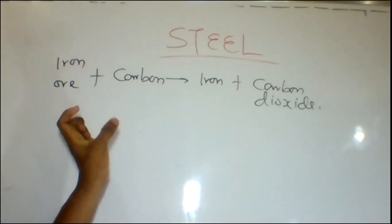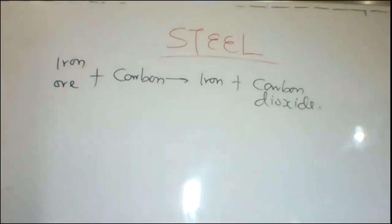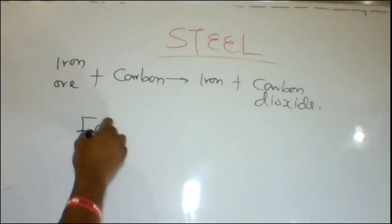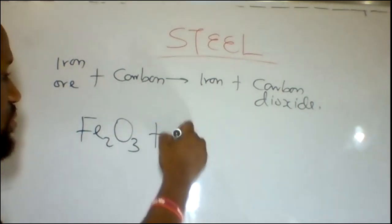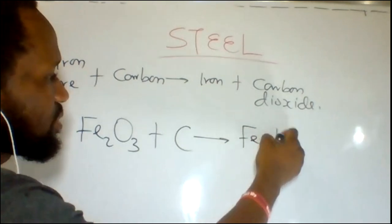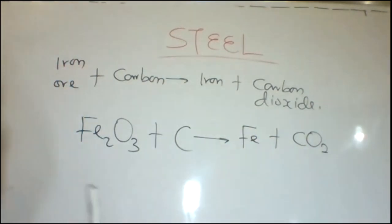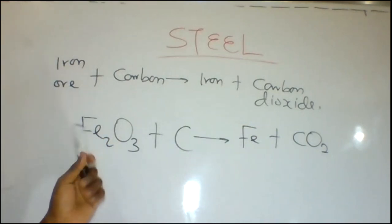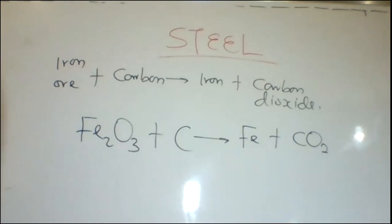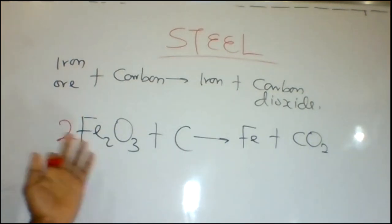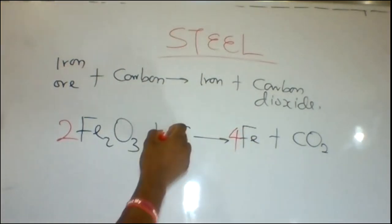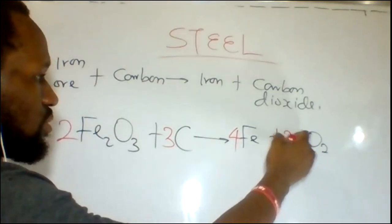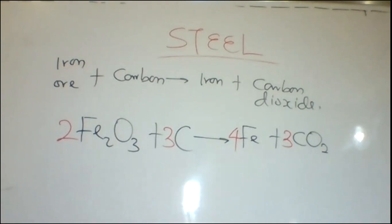Sometimes iron ore can also react directly with carbon to form iron and carbon dioxide. So Fe2O3 can react with carbon to form iron and carbon dioxide. Balancing this equation: bring in 2 for iron making 4, and 3 on carbon, making oxygen 6 and 6. This is the balanced equation for iron ore combining with carbon to form iron and carbon dioxide.